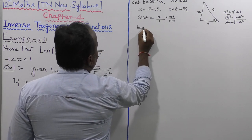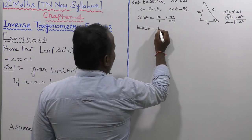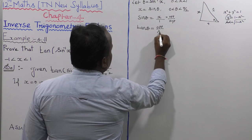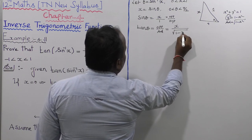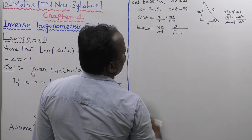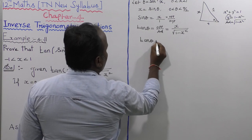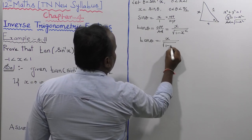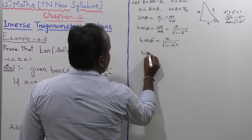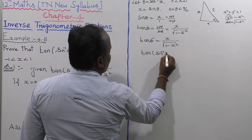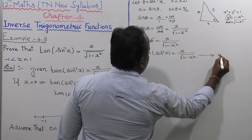Now let us find the value of tan theta. Tan theta equals opposite side divided by adjacent side, which is x divided by root of 1 minus x squared. So tan theta equals x divided by root of 1 minus x squared. This is equation number 2.